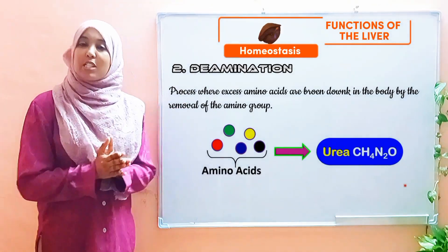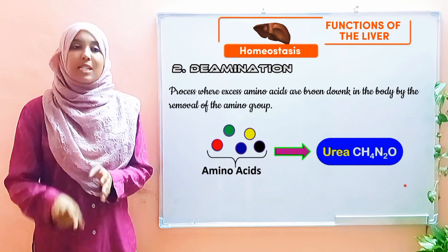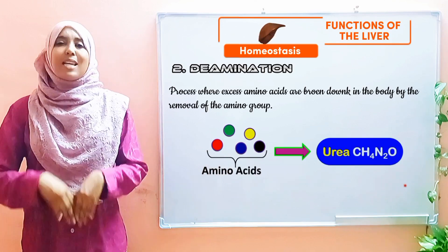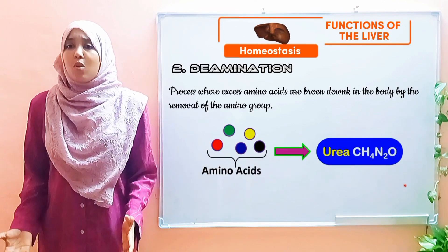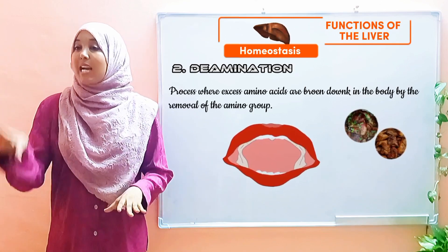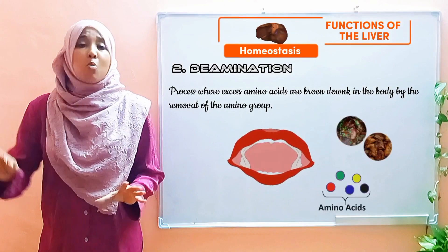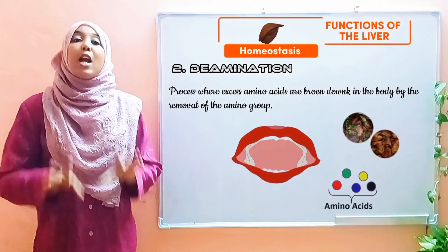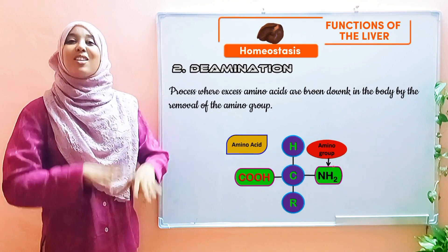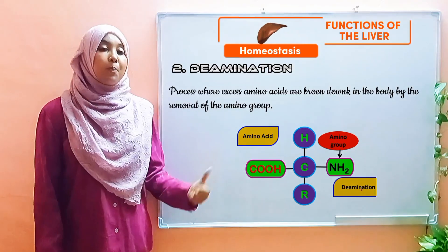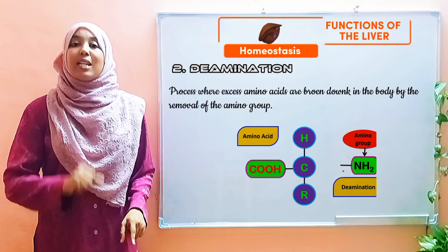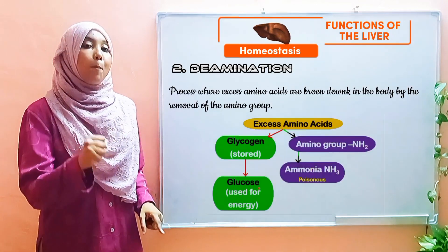Let's discuss what happens in deamination. Step number one is that the amino group from the amino acids is removed. What is the amino group? The building blocks of proteins are amino acids. When proteins are digested, they are broken down to the smallest molecules possible, and those are amino acids. All amino acids contain a compound called the amino group, which is represented as NH2.